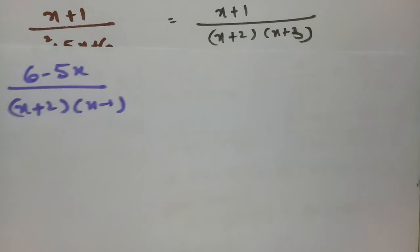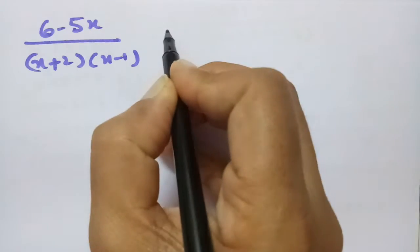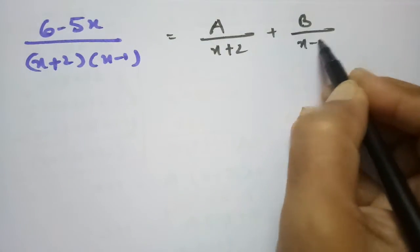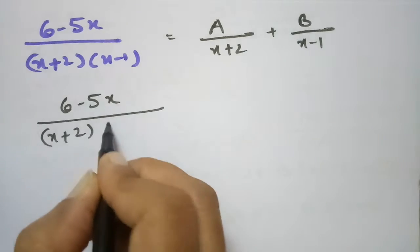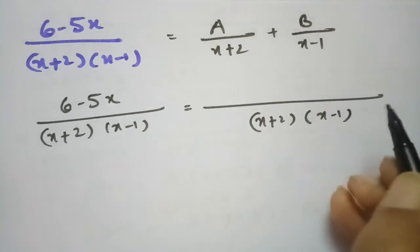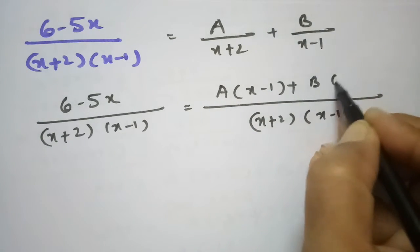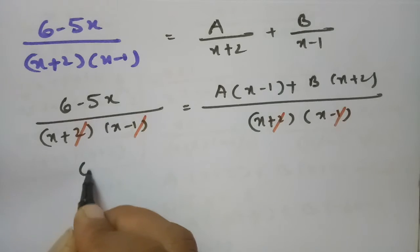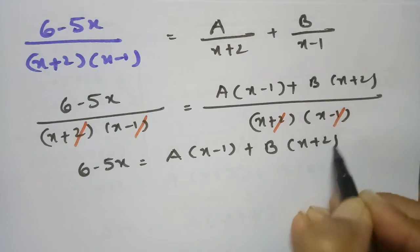The next question is (6-5x) / [(x+2)(x-1)]. I resolve this as A/(x+2) + B/(x-1). So (6-5x) / [(x+2)(x-1)] = A/(x+2) + B/(x-1). Taking LCM as (x+2)(x-1) and cross-multiplying, after cancelling the denominators: 6-5x = A(x-1) + B(x+2).